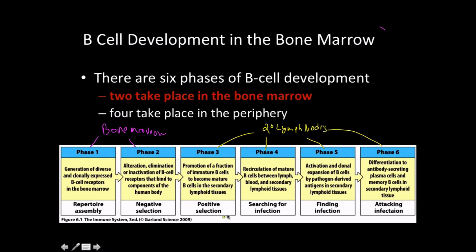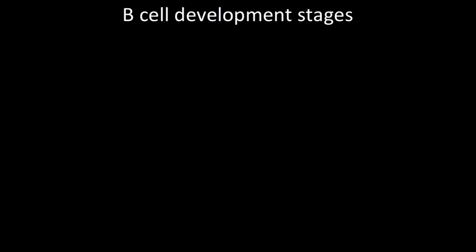The phases in the secondary lymphoid include positive selection, recirculation, activation, clonal expansion, and differentiation into memory and plasma cells. This is all material you probably already remember from the beginning, but let's review it.